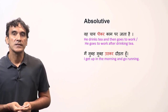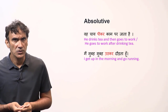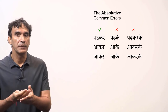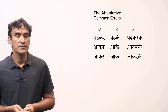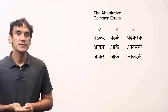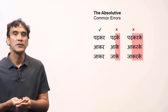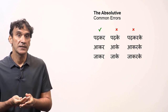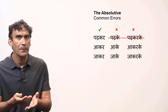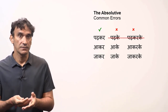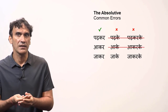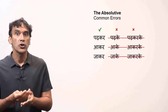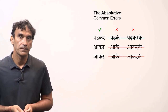Hindi speakers use the absolutive a lot in everyday conversation, so it is important to learn this form. There are some alternate forms people commonly use, but keep in mind they are not standard. Instead of the suffix 'kar', many people use 'ke' or 'karke'. For example: 'padkar' is the standard form, but you might hear 'padke' or 'padkarke'. Similarly, 'akar' → 'ake' or 'akarke'; 'jakar' → 'jake' or 'jakarke'. You should always use the standard form.